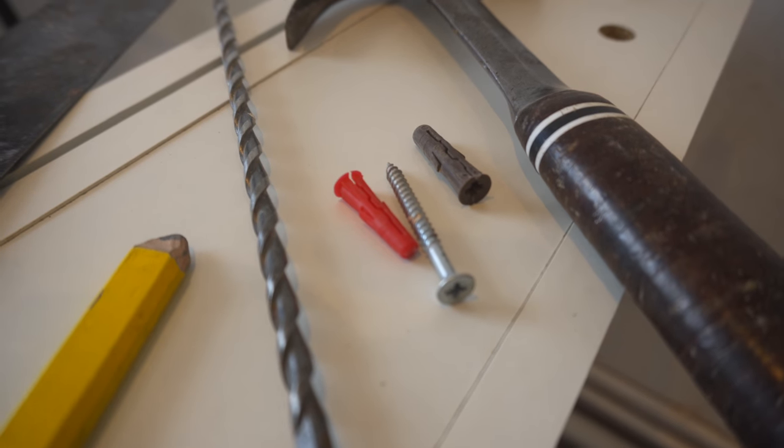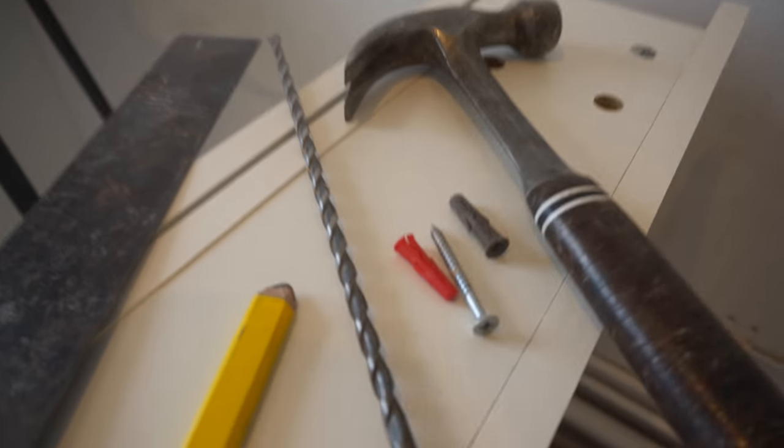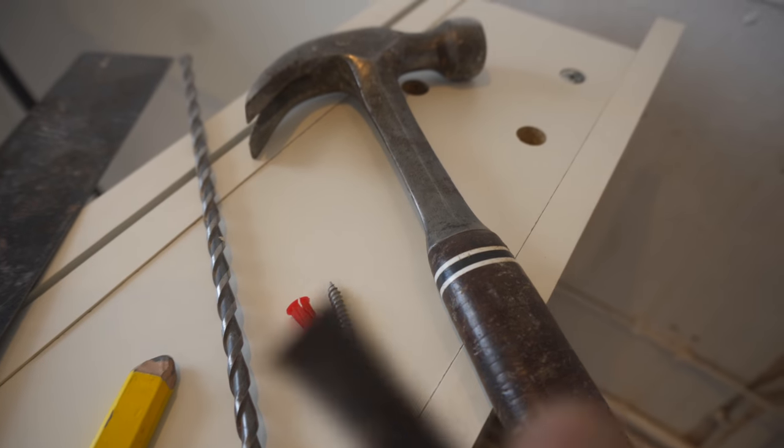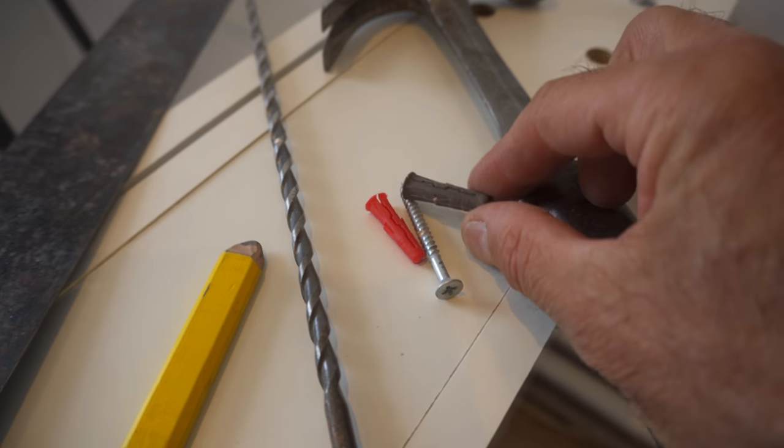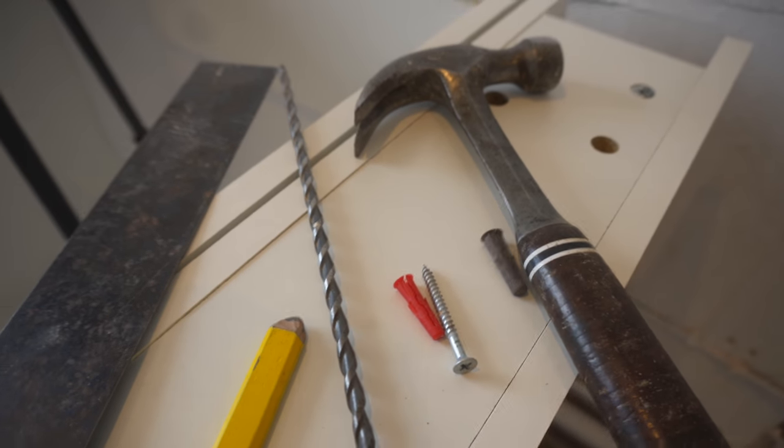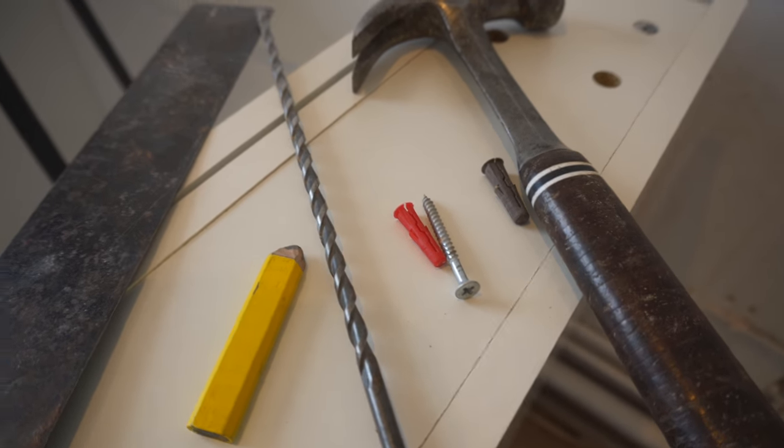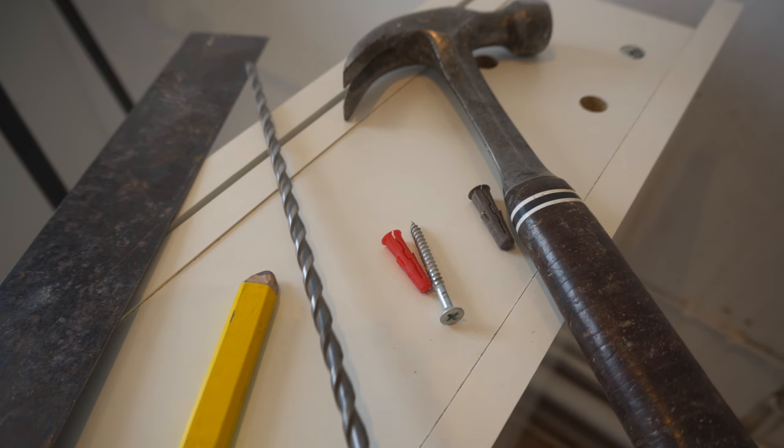So what we've got here is we have a hammer, we've got a 7mm brown plug and a 6mm red plug, a 2 inch number 10 screw (the metric equivalent is 50mm number 5), a pencil, and a bit of tape. Now the tape is a bit of a trick, so I'll show you in a second.